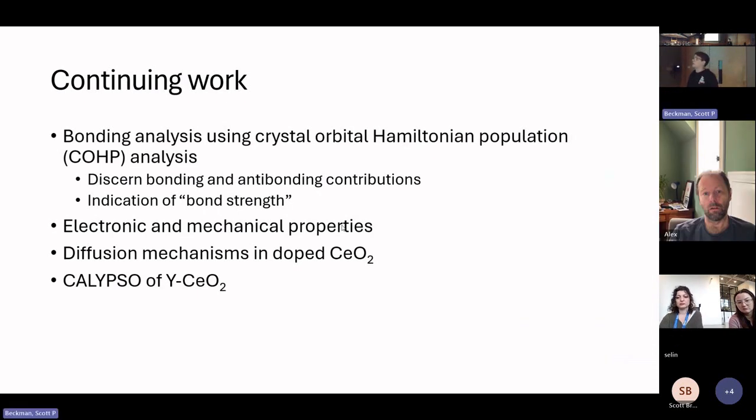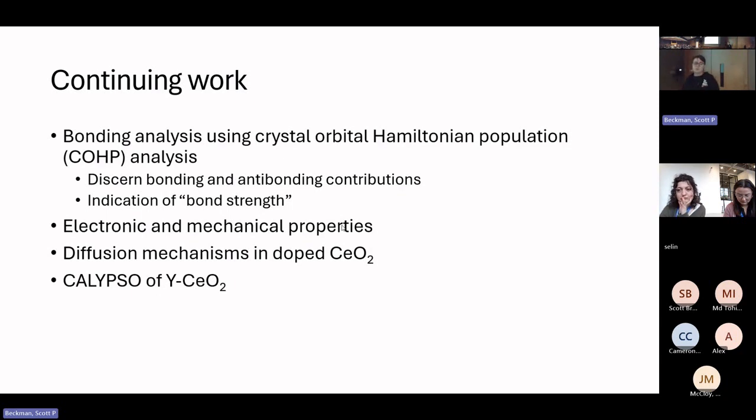Moving forward, I'm going to look at bonding analysis in these different doped structures. I'm going to use crystal orbital Hamiltonian population, which if you plot it along the density of states, what you're able to do is if you integrate within an energy interval, you can determine which bonds are contributing in that interval. It's kind of an indication of the bond strength, if you want to think of it that way. Doing some further electronic and mechanical properties to see how these doped structures change. One thing that's been interesting, and it's something found a lot in the literature, is that when you introduce dopings into ceria, the diffusion changes. So it's an understanding of how those diffusion mechanisms work in doped ceria. Then after verification of pure ceria with the CALYPSO method, looking at the doped structures.